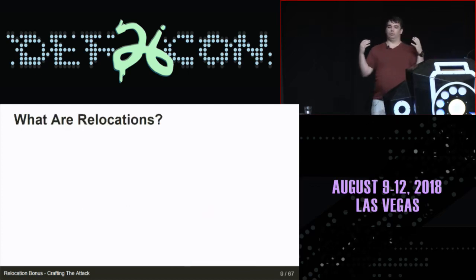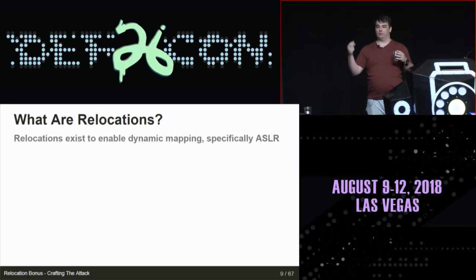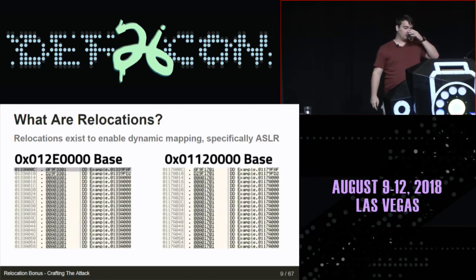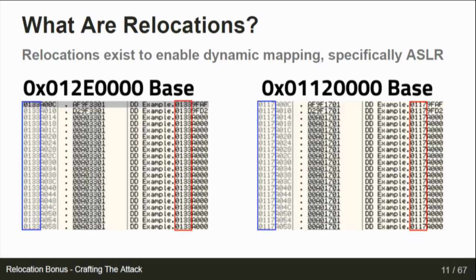First we need to ask: what are relocations? They exist to enable ASLR and dynamic mapping - though for the sake of executables they primarily exist to enable ASLR. Here's the same binary loaded at two different base addresses, and I'm specifically looking at a function table. The addresses are different between the two loads. On the left we have 0x0133 and on the right 0x0117, because they're at different base addresses. You can see the values are actually changed in the bytes of the function table.